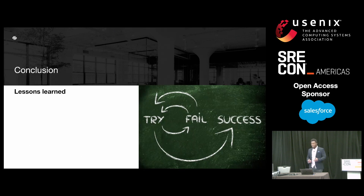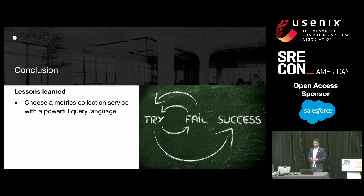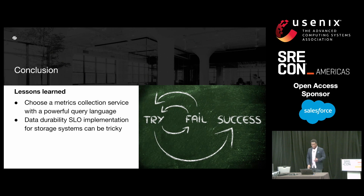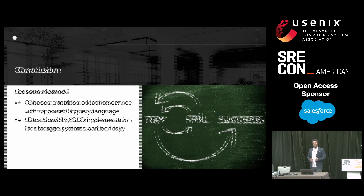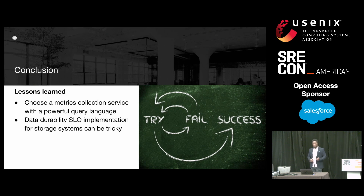We also learned some lessons. The first one being that choosing a metrics collection service with a powerful query language can make your life easier, especially when it comes to translating SLI definitions into actual metrics queries. Also, implementing a data durability SLO for a storage system can be tricky. A data durability SLO defines the probability that data is not permanently lost or corrupt in the event of a failure. This means to set a good durability SLO target, one should become familiar with the data loss prevention features of the storage system and enable them correctly — potentially even implement additional ones if a better initial durability target is needed. Also understand how the storage system deals with data integrity, because serving corrupt data to users will certainly make them unhappy.